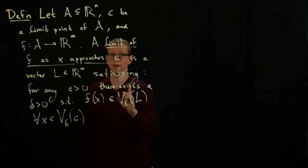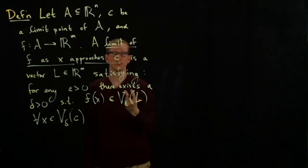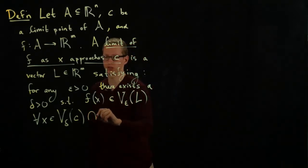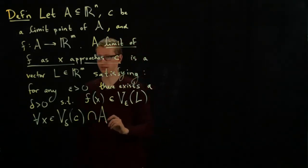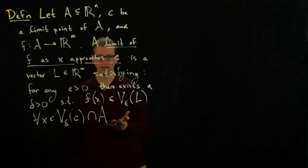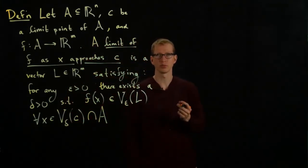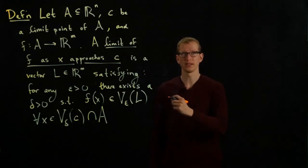Provided that this definition also makes sense, we also have to use elements in the domain of the function F, so we have to intersect this with A. So this is the definition of a limit of a function as X approaches a limit point in the domain of that function.